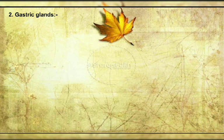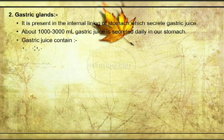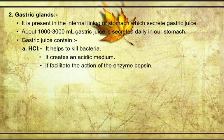Next is the gastric gland — secreted inside the stomach on the internal lining of the stomach. About 1000 to 3000 mL of gastric juice is secreted daily in our stomach. Gastric juice contains several components. First is HCl — the work of HCl is to kill all bacteria present in the food, keep the protein particles moist, and activate the pepsin enzyme. HCl creates an acidic medium and facilitates the action of the enzyme pepsin. Next is mucus — a moist structure present in the inner lining of the stomach, which protects the stomach from HCl under normal conditions. Mucus is made up of a special protein called mucin.